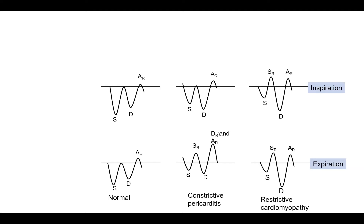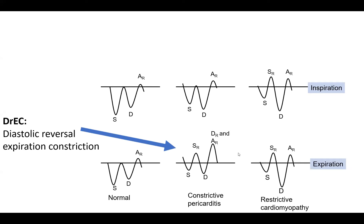In restrictive cardiomyopathy, by definition, there is no preload reserve, no stroke volume reserve — very limited filling, very limited variation in flow between inspiration and expiration, even less than a normal individual. Also, the IVC absolutely does not collapse with inspiration in restrictive cardiomyopathy. In constrictive pericarditis, even though the IVC is dilated, it does collapse some. The D reversal is characteristic of constrictive pericarditis — mnemonic: diastolic reversal, expiration, constriction.